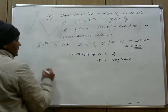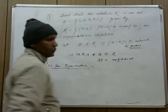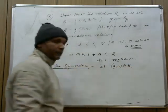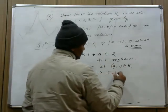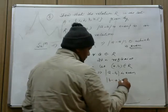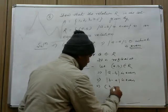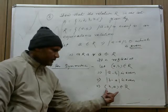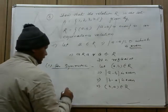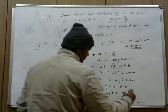Second part: for symmetric. Let (a,b) ∈ R. This means a − b is even. When a − b is even, then b − a is also even. So (b,a) ∈ R. That is, (a,b) ∈ R implies (b,a) ∈ R for every a and b in set A. Therefore it is a symmetric relation.